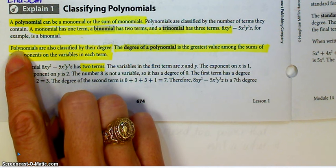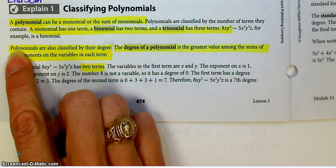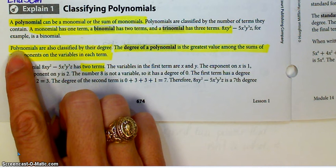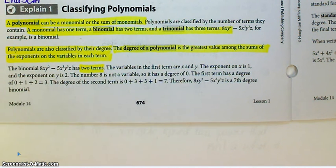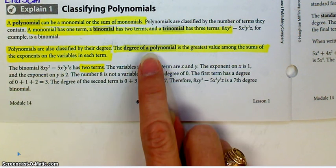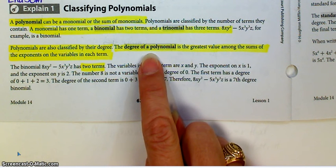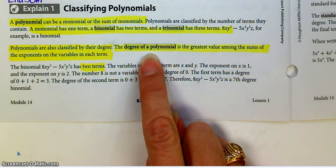Polynomials is just a general term. Polynomials can be monomials, binomials, trinomials, etc. And then polynomials are going to be classified by their degree. The degree of a polynomial is the greatest value among the sums of the exponents on the variables in each term.